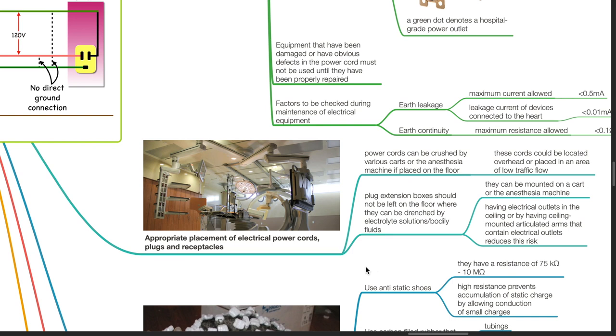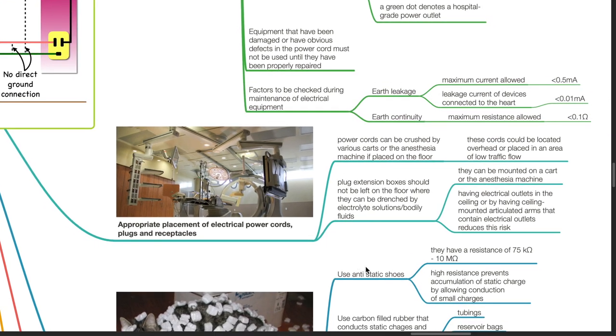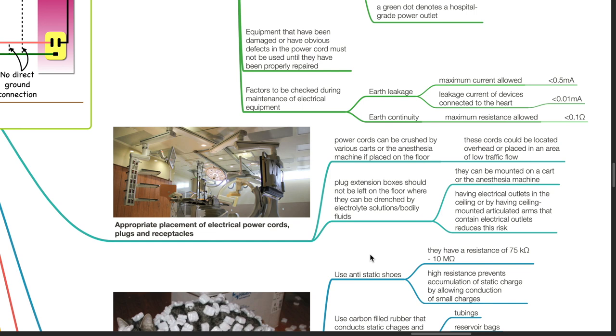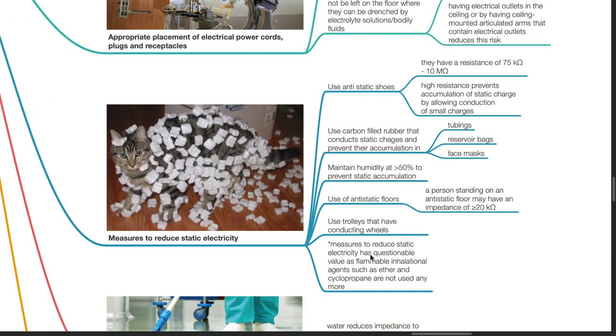Electrical power cords, plugs, and receptacles should be appropriately placed. Power cords can be crushed by carts or anesthesia machines if placed on the floor. These cords should be located overhead or in areas of low traffic flow. Plug extension boxes should not be left on the floor where they can be drenched by electrolyte solutions or bodily fluids; they can be mounted on a cart or the anesthesia machine. Having electrical outlets in the ceiling or ceiling-mounted articulated arms containing electrical outlets reduces this risk.